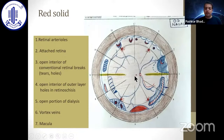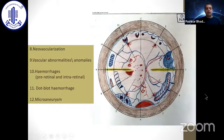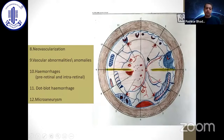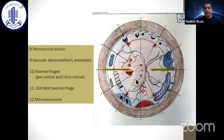The macula should be represented by a plus sign in red. If it is detached or there is edema, use blue color. All neovascularization and other vascular abnormalities should be drawn with red color. Pre-retinal hemorrhage, intraretinal hemorrhage, dot-blot hemorrhage, and flame-shaped hemorrhage should be drawn with red solid color. Microaneurysms should also be drawn in red. Vascular abnormalities should be drawn with red color.